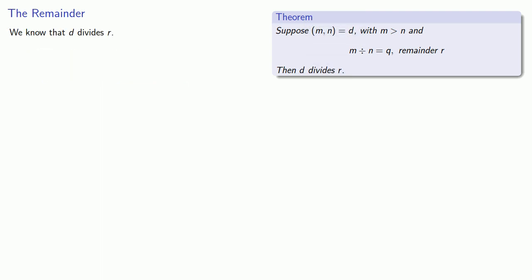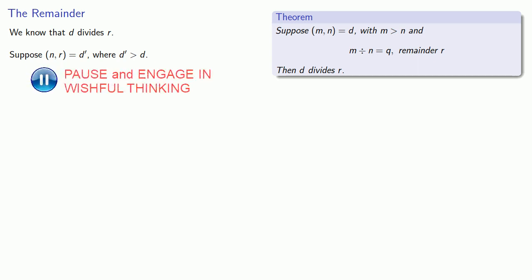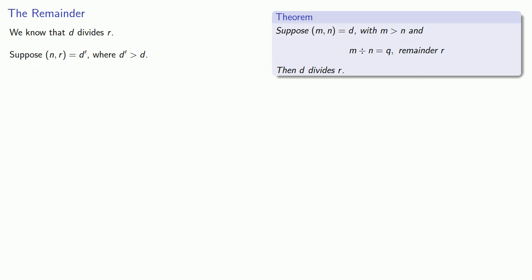This also means that N and R have some greatest common divisor. So suppose the greatest common divisor of N and R is D prime, where D prime is larger than D. Since it is a divisor, then N is D prime times U, and R is D prime times V.